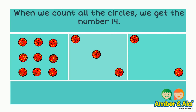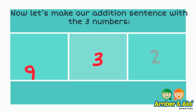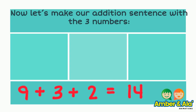The next thing we need to do is count the circles all together. When we count all the circles, we get the number 14. Now, let's make our addition sentence with the three numbers: nine plus three plus two equals 14.